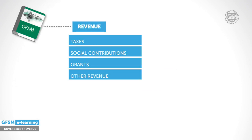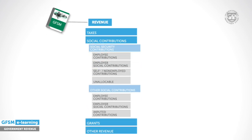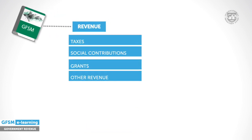Social contributions constitute an important category. These are split by type of scheme and payer. Social security contributions are classified as revenue for social security schemes that only government units operate. Other social contributions are classified as revenue for social insurance schemes operated by employers on behalf of their employees. Social contributions do not include contributions for employment-related pensions and other retirement schemes — such contributions create a liability in GFSM, so they are not affecting net worth and are accordingly recorded as a financial transaction.